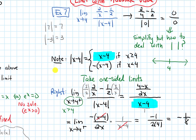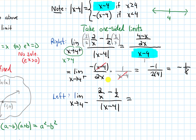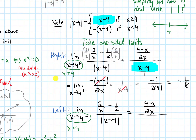Now let's do the limit from the left. We take the limit as x approaches 4 from the left of 2 over x minus 1 half, over the absolute value of x minus 4. On the top, getting a common denominator gives us 4 minus x over 2x. Now for the denominator: because x is approaching 4 from the left, x is less than 4, so we use the bottom piece of the piecewise function, and the absolute value becomes negative (x minus 4).